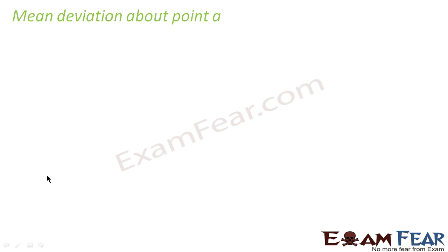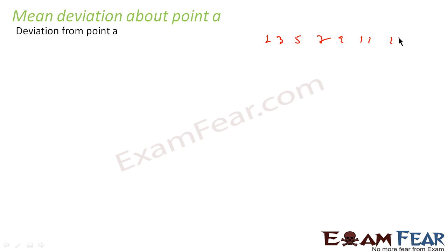But still we need something more — we need mean deviation. We find mean deviation about a point, and that point can be any value in the data set. For example, if you have values 1, 3, 5, 7, 9, 11, 12 and you want to find mean deviation, you have to first find mean deviation about a point, because mean deviation as a term has no meaning by itself.